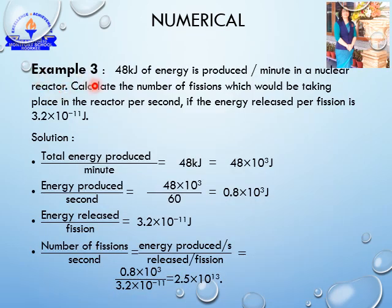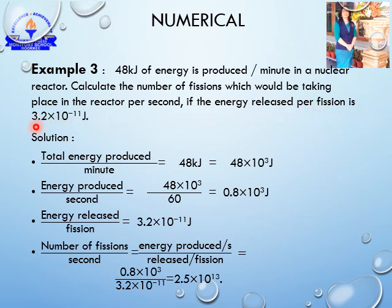Example number 3: 48 kilojoules of energy is produced per minute in a nuclear reactor. Calculate the number of fissions taking place in the reactor per second. We need to find how many fissions occur per second, given that the energy released per fission is 3.2 × 10⁻¹¹ joules.